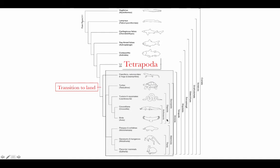Lots of different features are associated with this transition to land in the group called tetrapods. Tetrapods consist of all of the land-dwelling vertebrates, even if they have secondarily readapted to an aquatic habitat. Tetra means four, poda means feet — so these are fundamentally four-footed species, although they also include descendants of four-footed species that no longer have legs, such as snakes, dolphins, and other members that have secondarily lost those four legs.